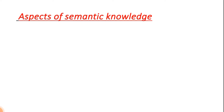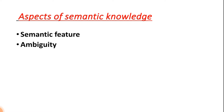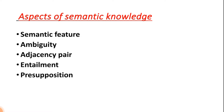There are ten aspects of semantic knowledge and we have discussed five of them. The remaining five aspects are: semantic feature, ambiguity, adjacency pair, entailment, and presupposition. We will discuss each of these aspects one by one with examples so you will understand them very easily.